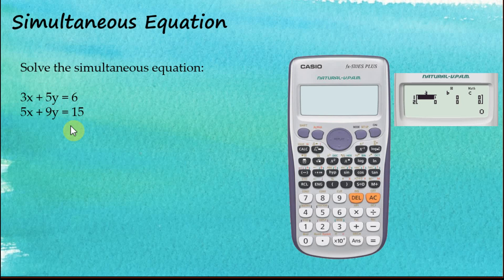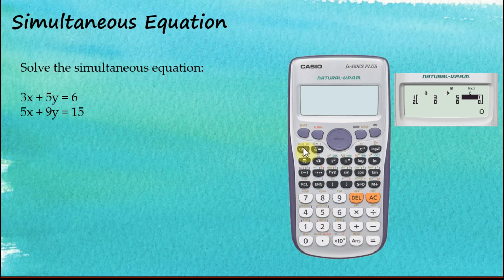So this is my a, this is b, and this is c, and this is my second a, second b, and second c. For the first equation, a is 3 — enter 3, and the cursor moves to the next. My b is 5 — enter 5, and then c equals 6. Then it moves to the second equation: a equals 5, b equals 9, and c equals 1.5.